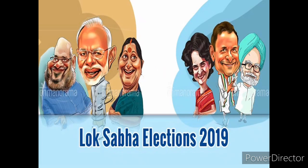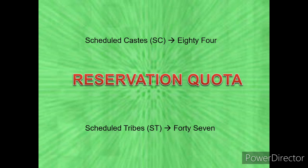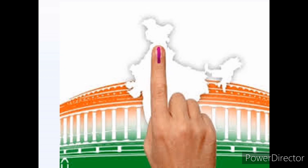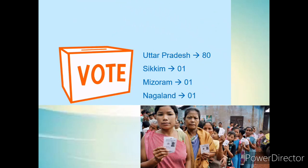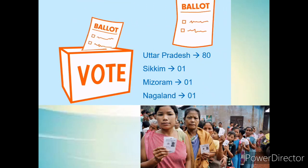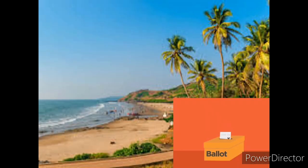During the election to the Lok Sabha, 530 members are directly elected from the states and 13 members are directly elected from the union territories. Of the 530 seats, 84 are reserved for persons belonging to the scheduled castes and 47 are reserved for scheduled tribes. Election constituencies are demarcated as per the density of the population — hence Uttar Pradesh sends 80 MPs to the Lok Sabha, whereas Mizoram, Nagaland, and Sikkim send 1 MP each.